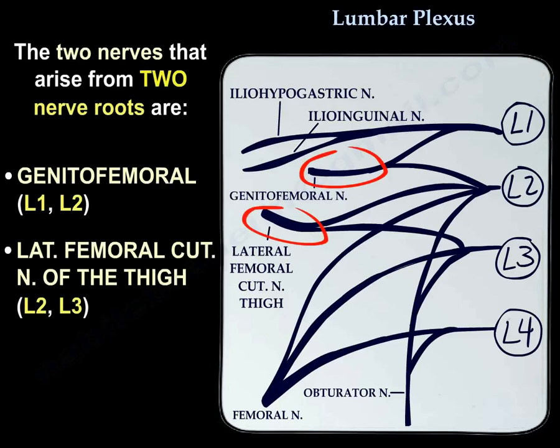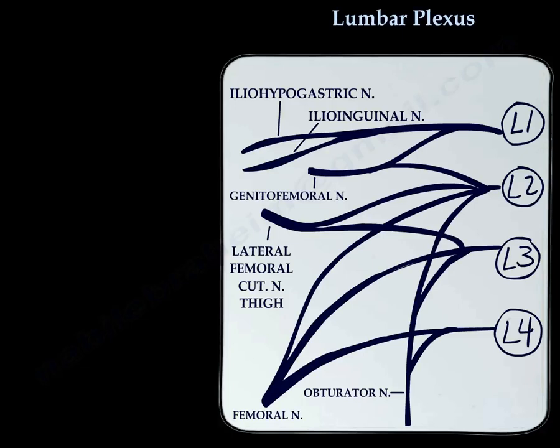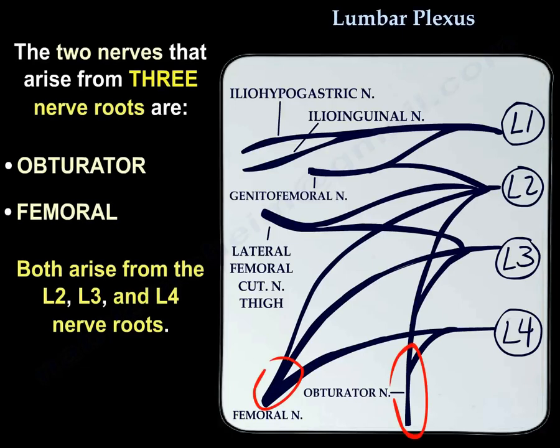The two nerves arising from two nerve roots are the genitofemoral nerve, which arises from L1 and L2, and the lateral femoral cutaneous nerve of the thigh, which arises from L2 and L3. The two nerves arising from three nerve roots are the obturator nerve and the femoral nerve, which arise from L2, L3, and L4.